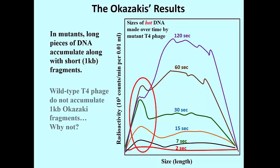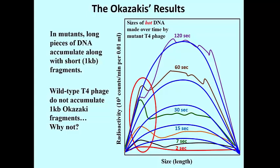When Okazaki did the same experiment with wild type phage, adding hot thymine only tagged longer and longer DNA, as indicated by the dark blue curves in this graph. That's because ligase was so efficient that the short pieces that were made were quickly ligated to make long strands of new DNA. Okazaki had demonstrated discontinuous synthesis of short pieces of DNA using the T4 ligase-deficient phage, which explained how one strand must behave at the replication fork.